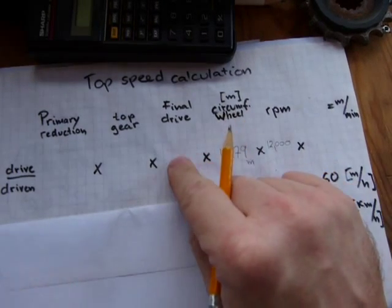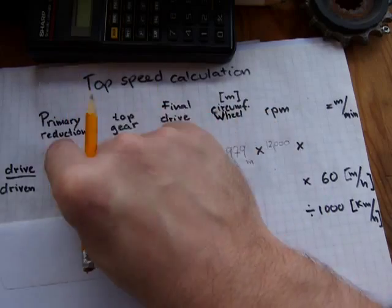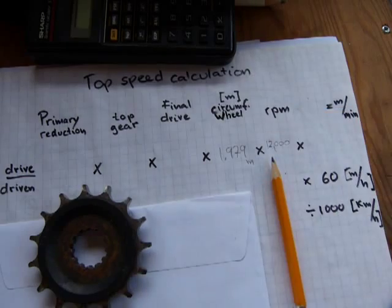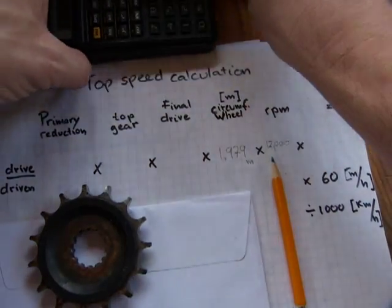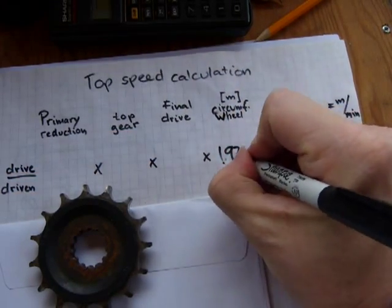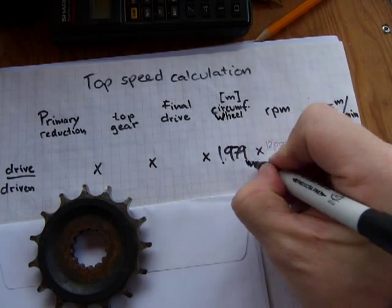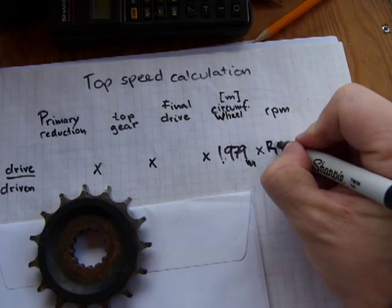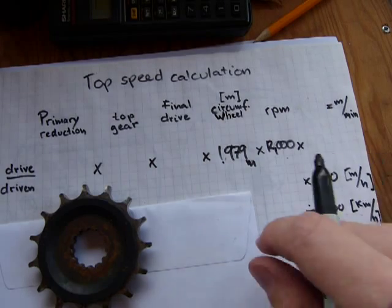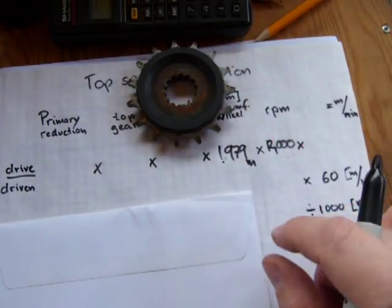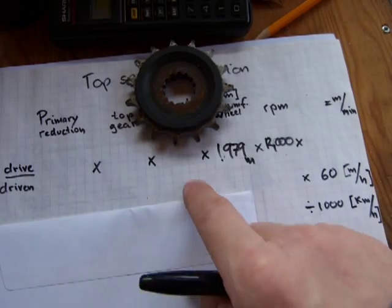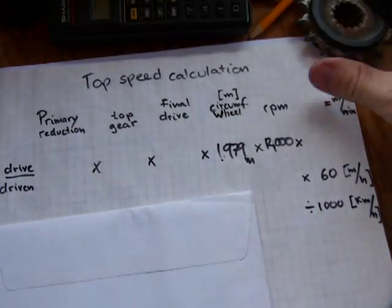Next thing that you need to know, or need, is final drive, top gear and primary reduction. What the heck are those? The final drive is a fraction, a ratio of two things. Let me just do it in this marker. So that was 1979 millimeters and now it's 1.979 meters. And that's 12,000 RPM. So final drive - take the number of sprockets on the front, on the engine. That's going to be your drive sprockets. And your driven - take the number of sprockets on the rear wheel, the big ones. That's going to be your final drive.